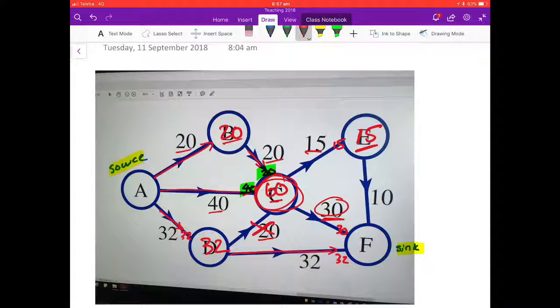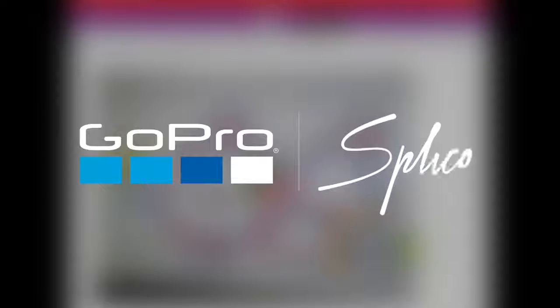Coming from node E, I've got 15 units available. I've only got a capacity of 10, so I can pass on the full 10 there. And we can see that the maximum flow is going to be the sum of all of these three amounts coming into the sink, into F, which gives us the maximum flow.